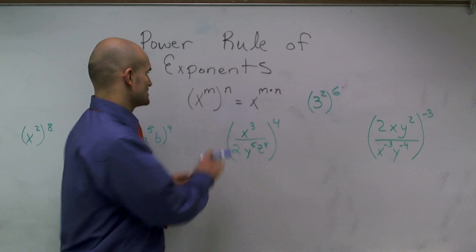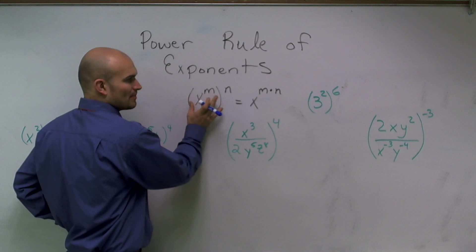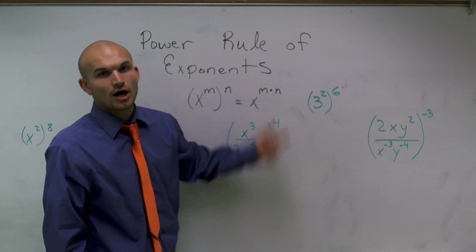The power rule of exponents states that if we have a number raised to a power, and that number raised to a power is raised to another power, what I can do to simplify that is to multiply our two exponents.